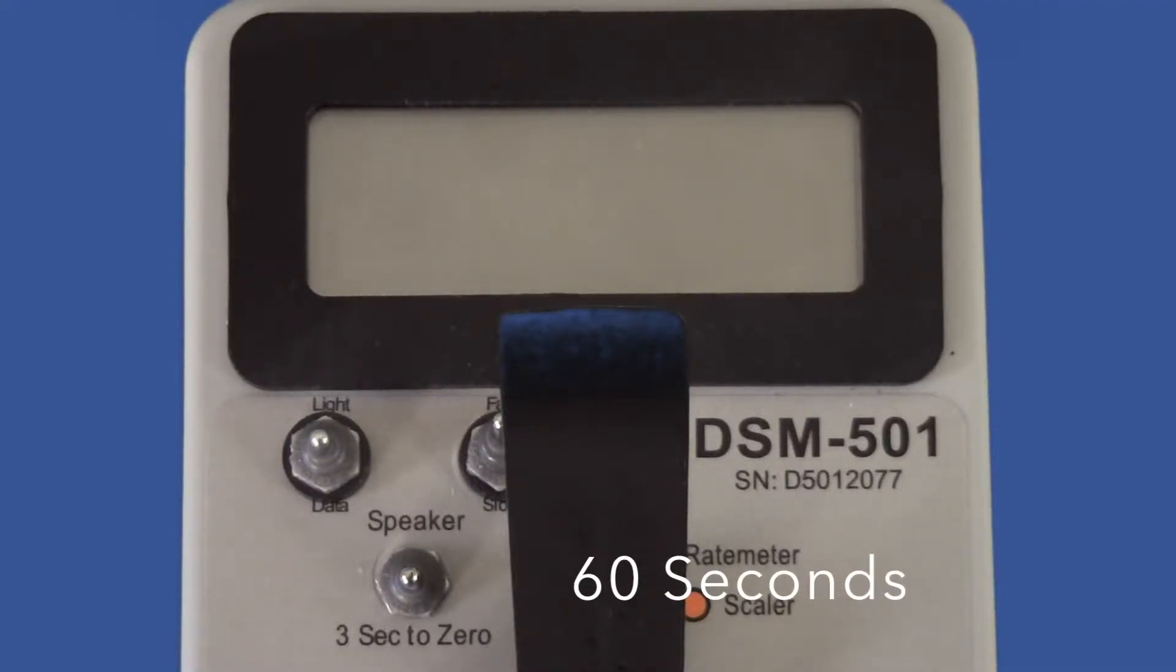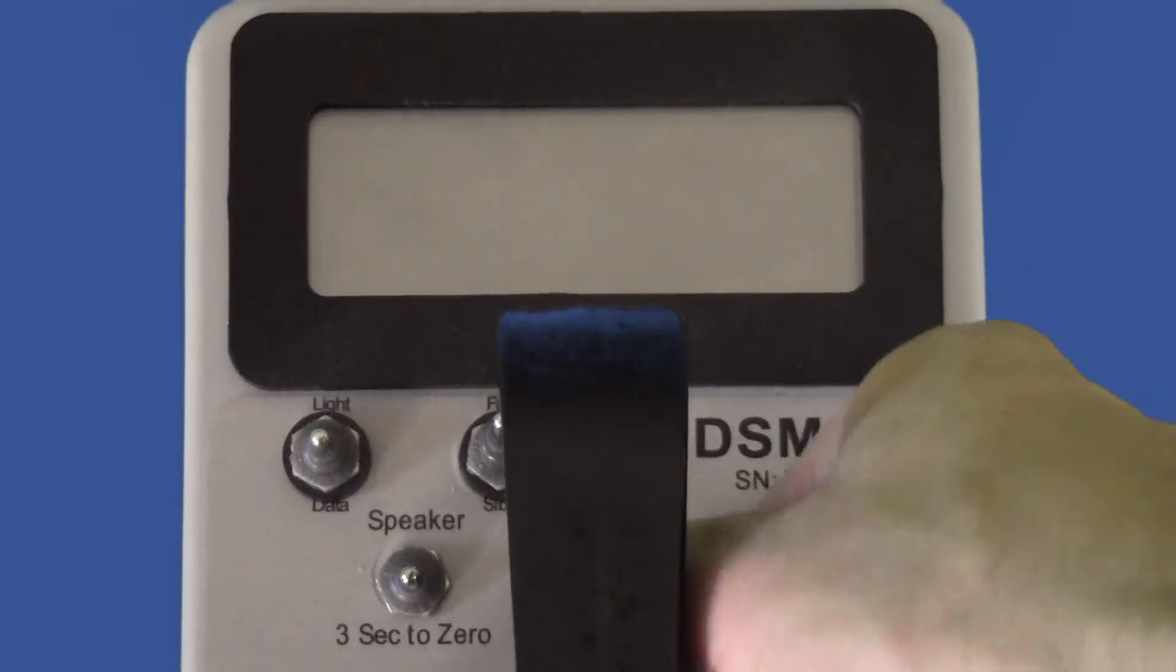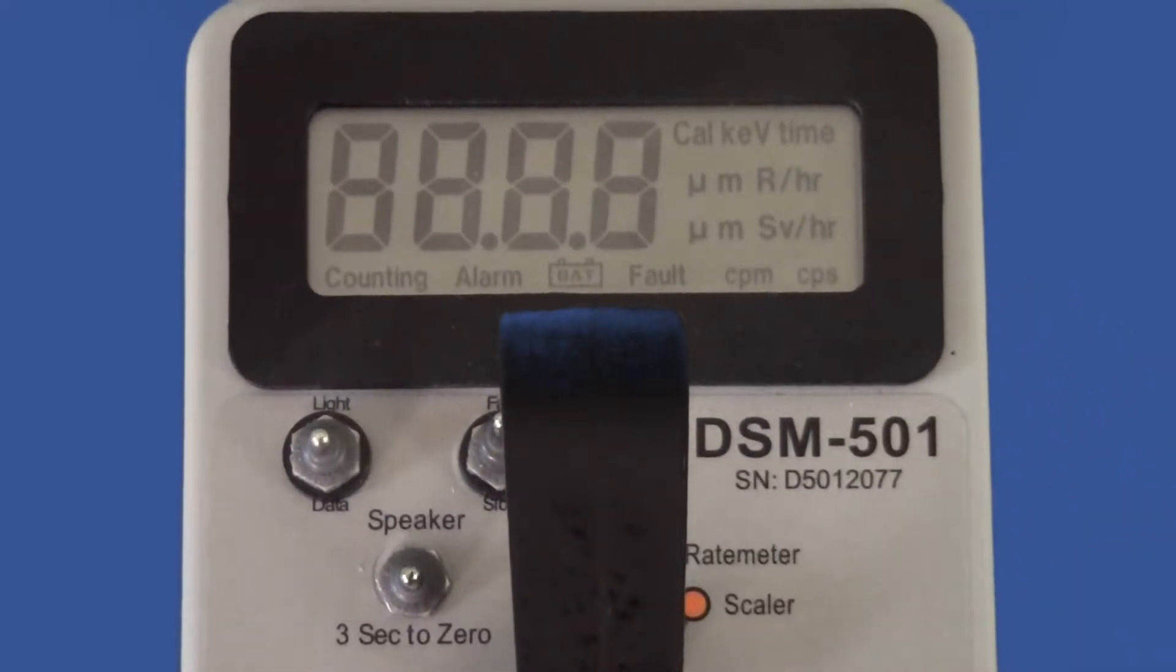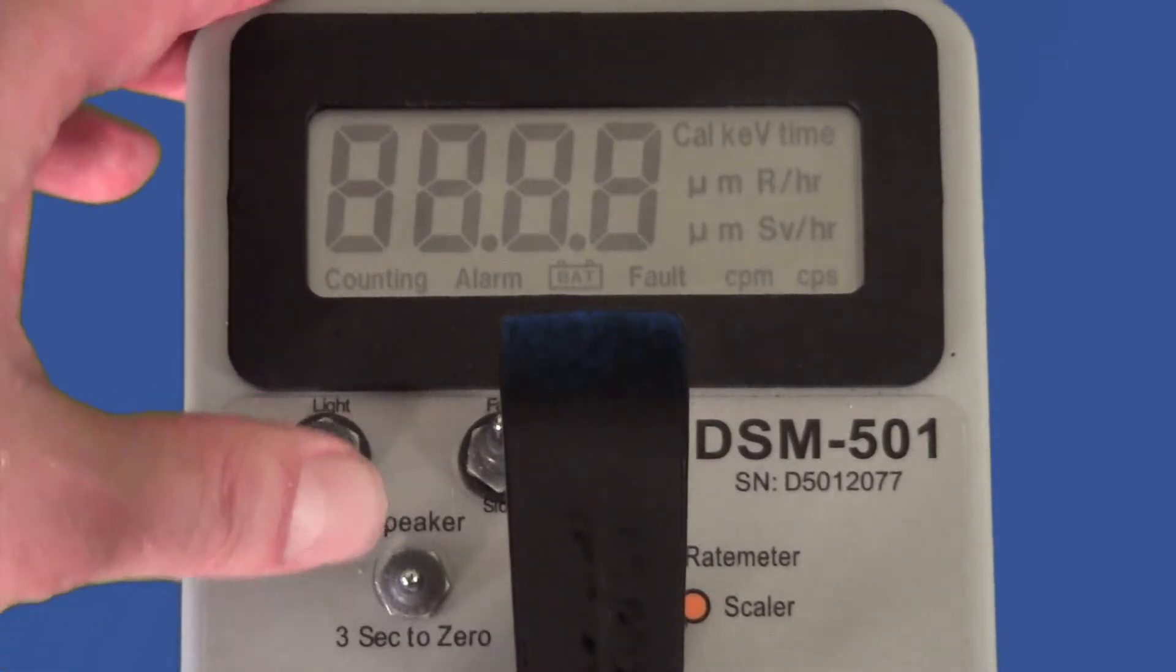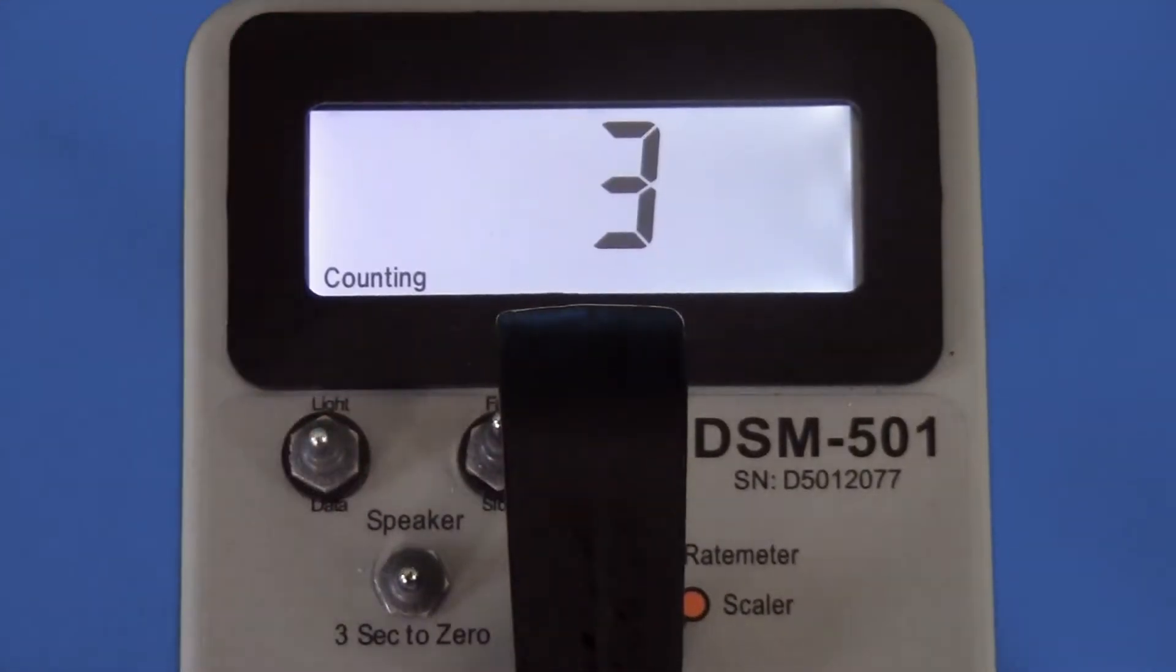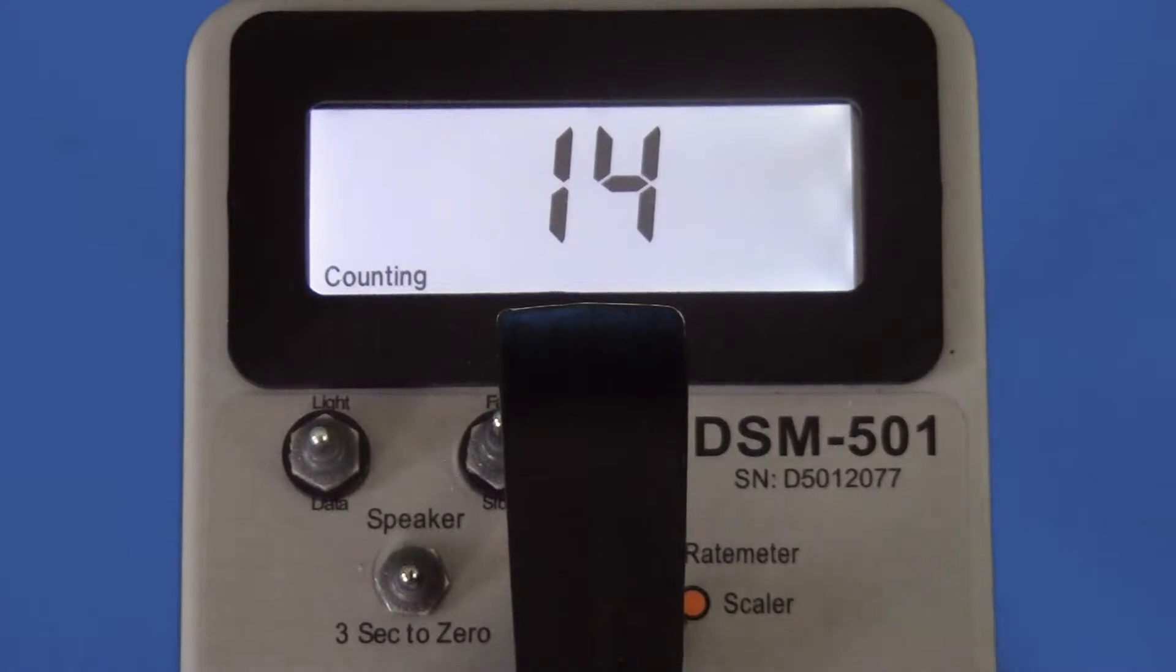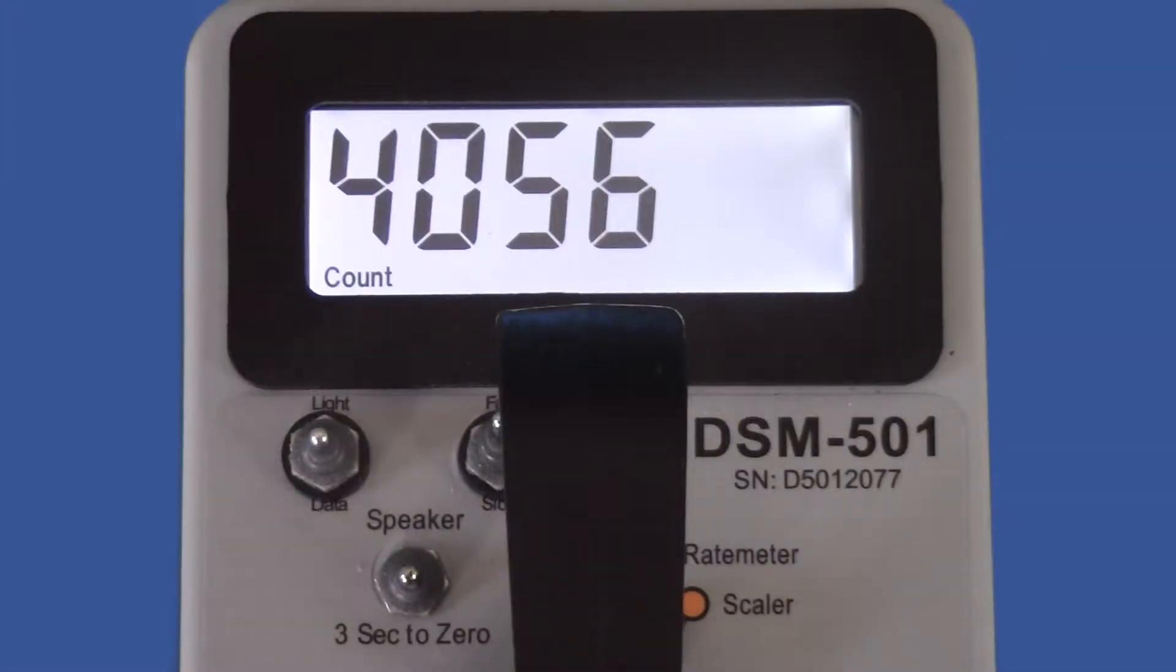Now we will try the scalar mode set at a 60 second time interval. It's the same as before. Simply turn the scalar mode on, place the source near the window, and after 60 seconds, skipping ahead, the scalar yields 4,056 counts over 60 seconds.